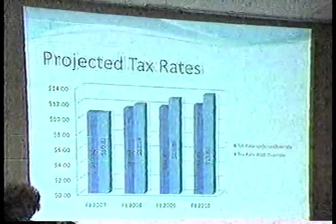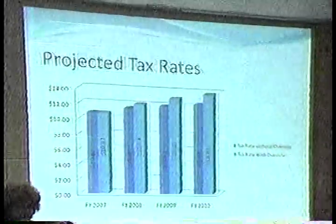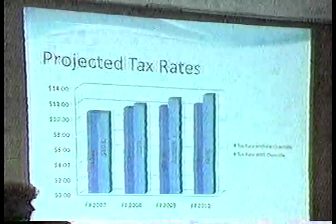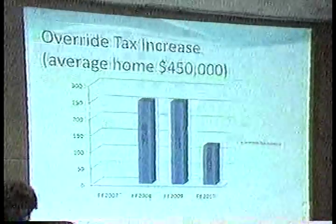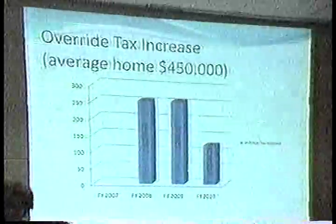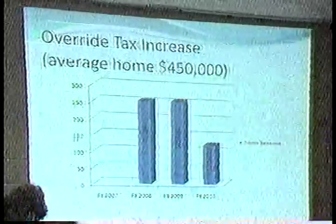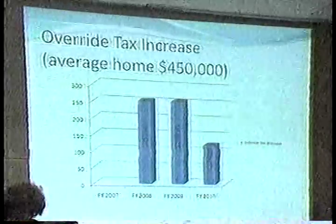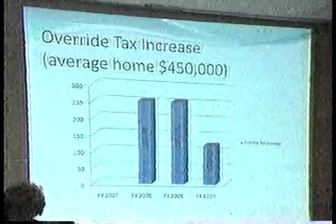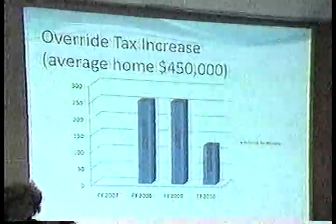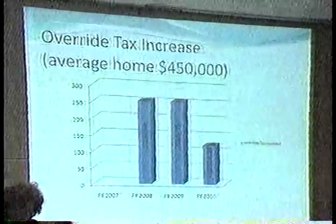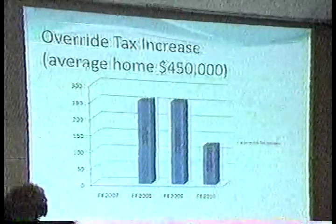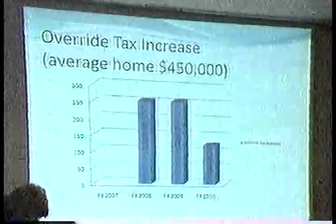The dark blue represents no override. So without an override, you're still going to have a tax increase. Focusing only on the cost of the override: for an average home of $450,000 assessed value, the FY 2008 increase in taxes would be $255.48. That would be the same whether it's a one-year or a three-year override. In FY 2009, it would be an additional cost of $256. In FY 2010, the override cost would be $124.28.